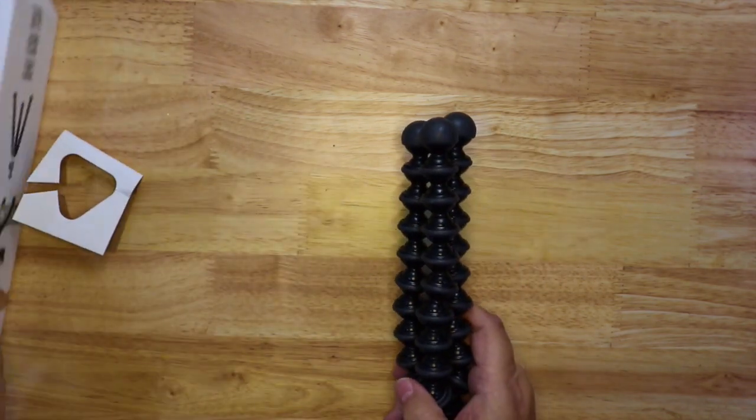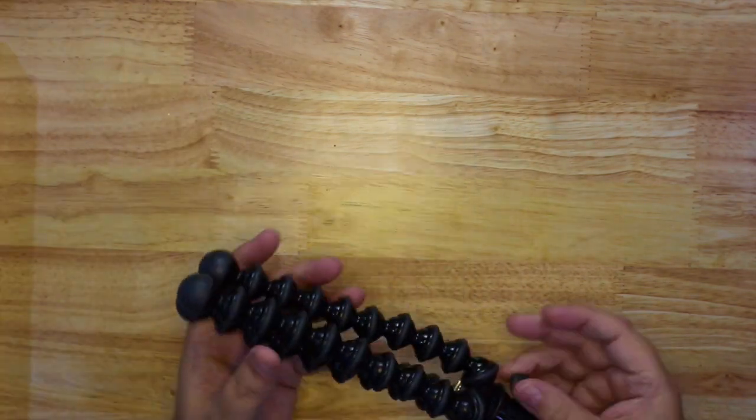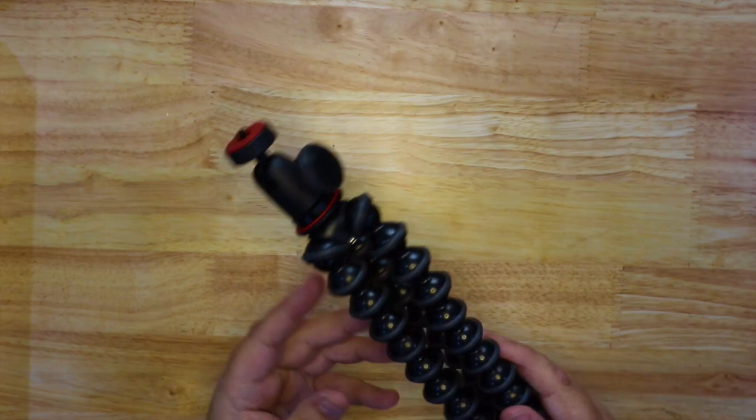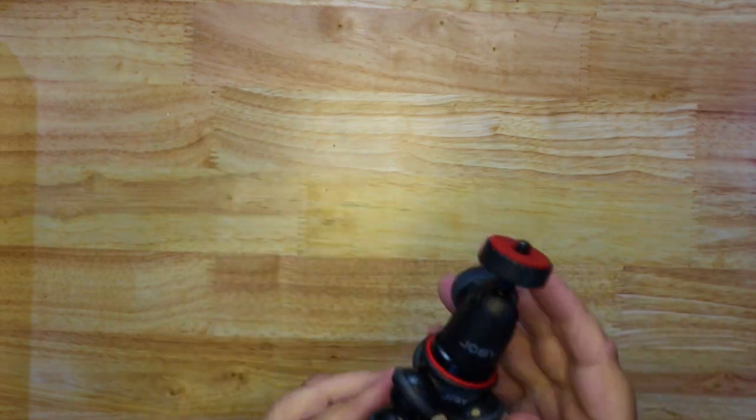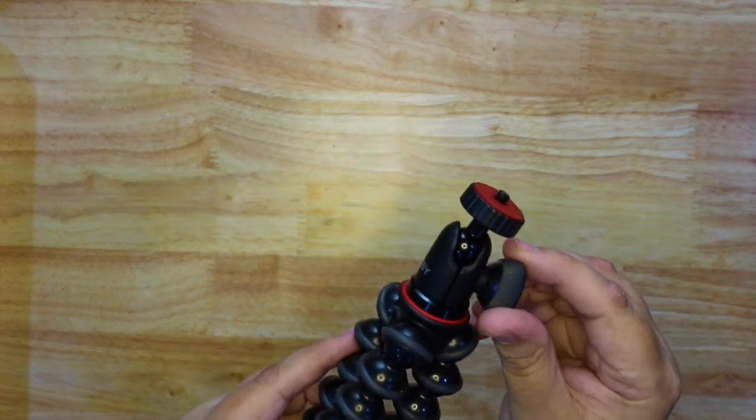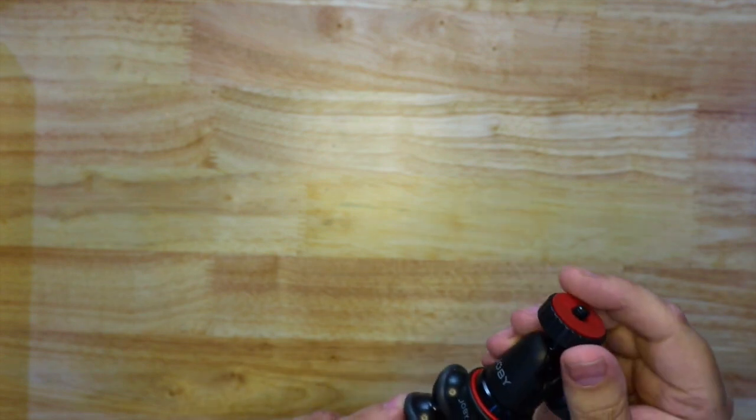So even if you have something like the Canon 6D Mark II, which is about 650g, that would only allow you to have the 50mm lens on. Anything more and it's going to topple over.